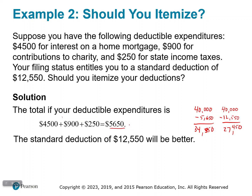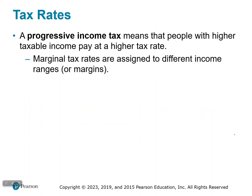You'd rather pay taxes on a smaller amount because the taxes will be smaller. That's why you always take the larger deduction — the bigger number is the one you want to subtract, making your taxable income as small as possible.